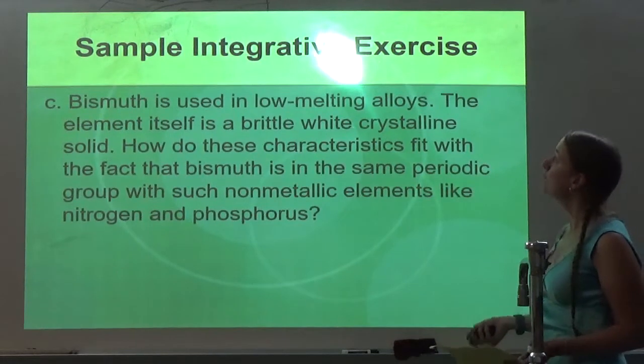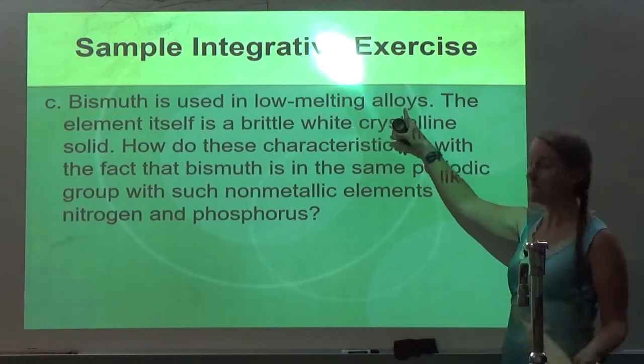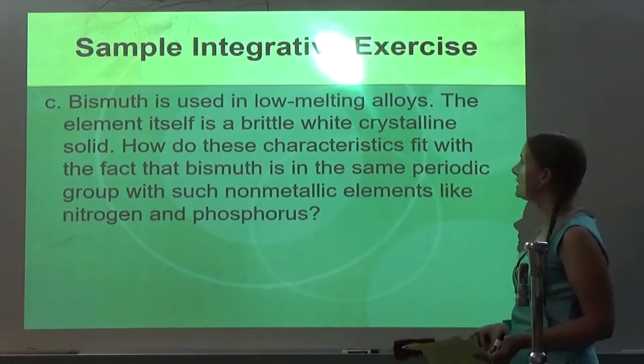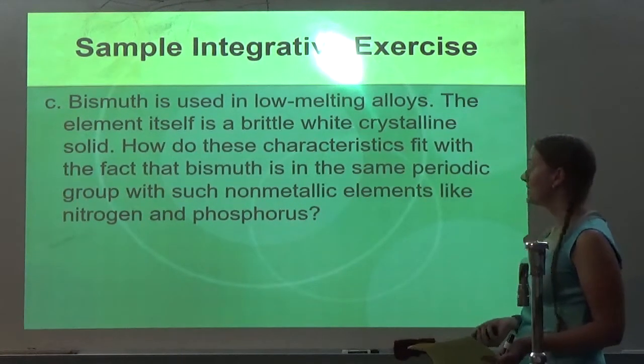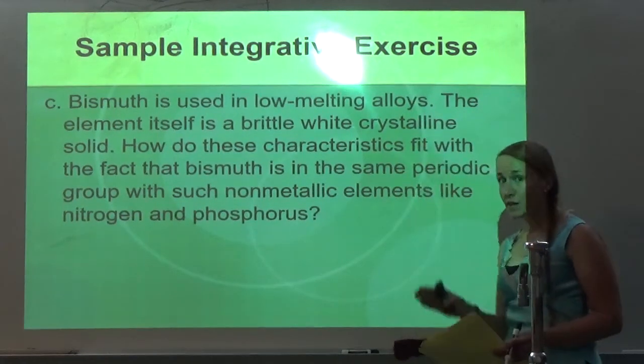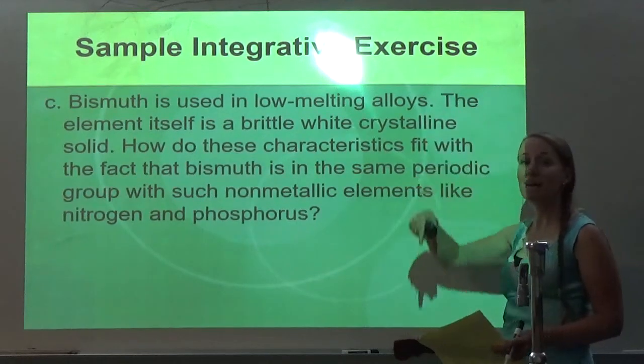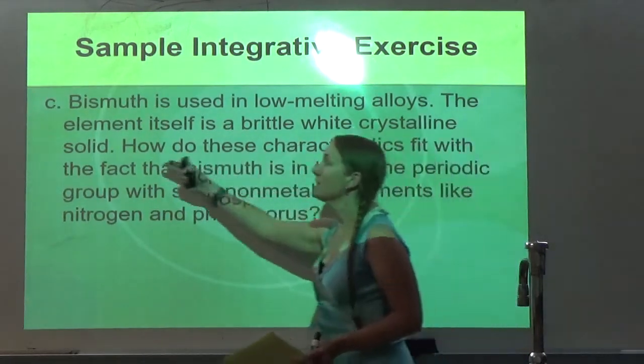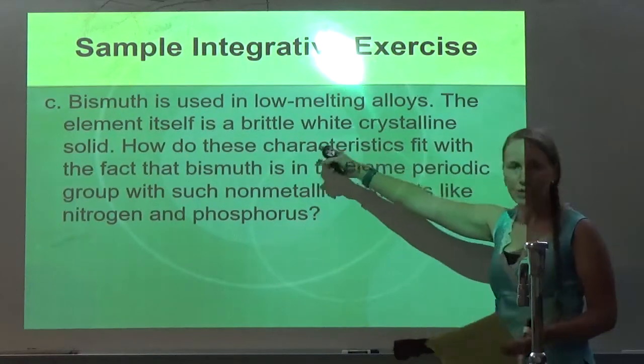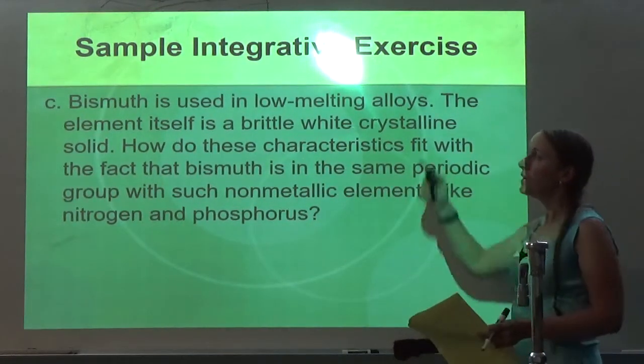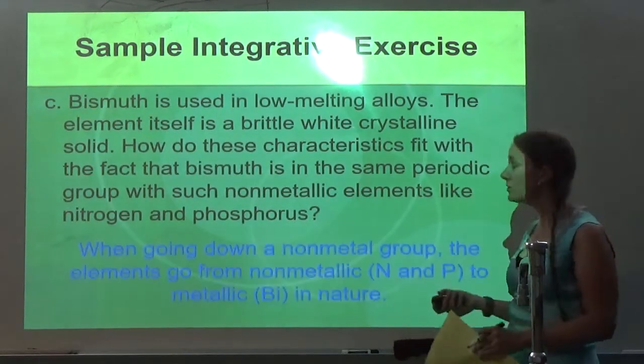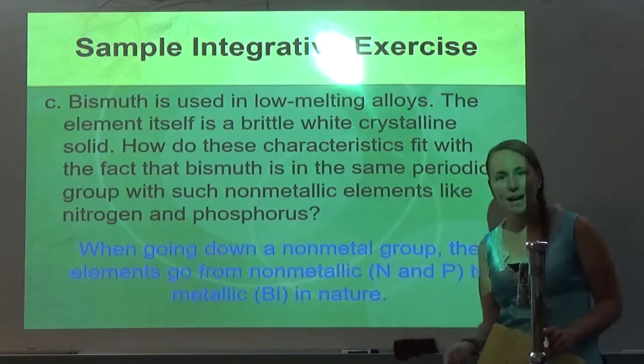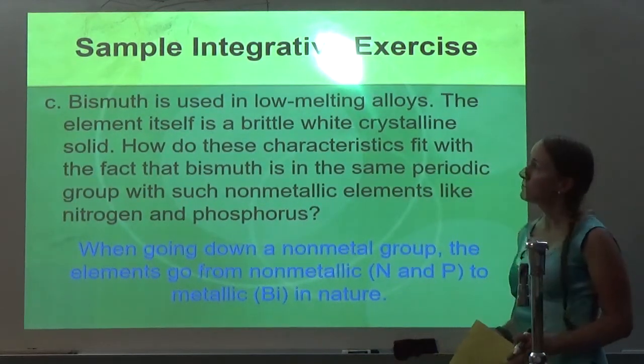It says bismuth is in low melting alloys. Remember, alloys are mixtures with metallic properties. The element itself is a brittle white crystalline solid. How do these characteristics fit with the fact that bismuth is in the same periodic group with such non-metallic elements like nitrogen and phosphorus? Well, first of all, bismuth is at the very bottom. So we know as you go from top to bottom on the non-metals, it goes non-metallic down to metallic. And so that's why you're seeing metallic properties like it's in alloys. It's a solid. But you're also seeing some non-metallic properties like it's brittle. Because it's at the bottom of the group, we know it can be in a group with non-metals because as you move down, the elements go from non-metallic like N and P to metallic like Bi because it's much lower on the periodic table.